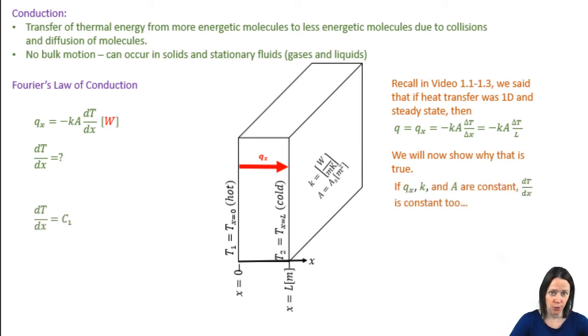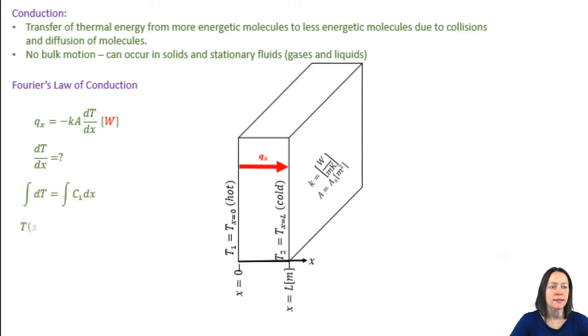If the heat transfer rate, the thermal conductivity, and the surface area are constant, dT/dx is constant as well. Let's call that constant C1. If we bring the dx over to the right and integrate, we get that T as a function of x is equal to C1 x plus C2.